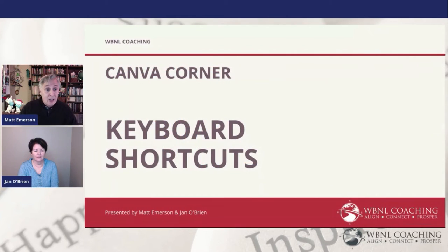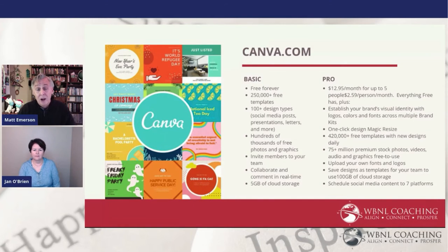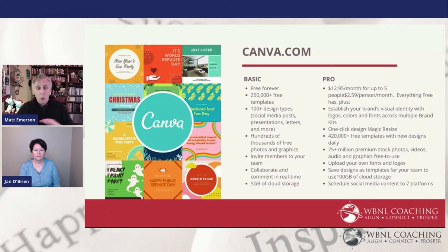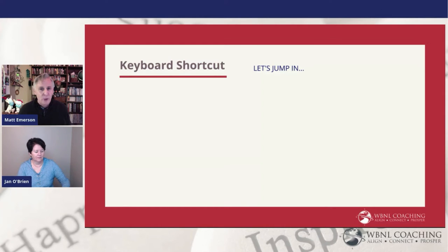We are going to talk about shortcuts today. As always, I want to remind you that you can go to Canva.com. If you don't already have a Canva subscription, it is absolutely free. You can get the basic version for free, or you can upgrade to Pro for just $12.95 a month and get all of the incredible tools in Canva. They've been running a 30-day free trial for that Pro version. Keyboard shortcuts can really save you a lot of time. The shortcuts you'll find in Canva are very similar to those in Microsoft Word or on Mac.